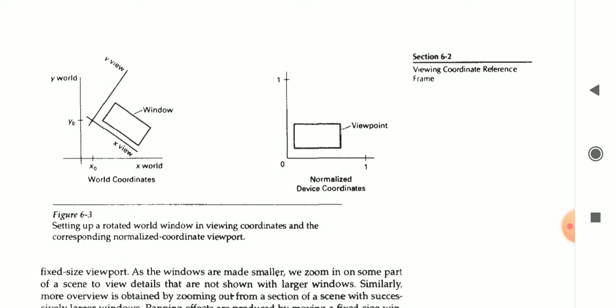Now look at this image. This image shows the viewing coordinate reference frame. The left side image is showing an image of view world coordinate. And the right side image is showing the viewport coordinate, that is normalized coordinate.